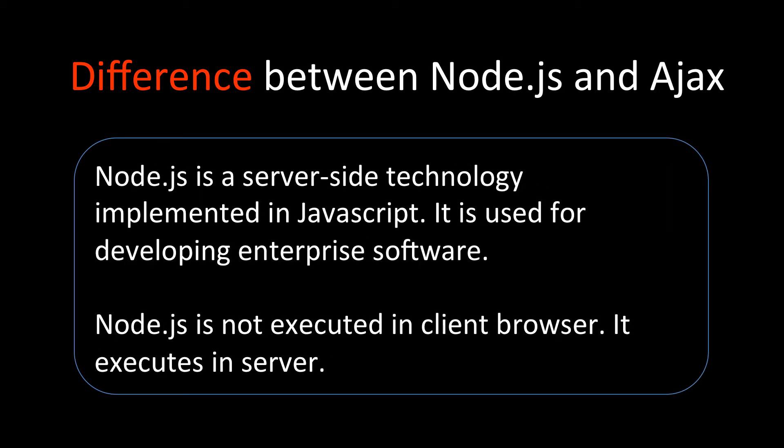Whereas Node.js is a server-side technology implemented in JavaScript. It is used for developing enterprise-level software — we can use Node.js to develop very large applications. Node.js is not executed in the client browser; it executes on the server, so it's server-side scripting. The main difference is: Ajax is on the client side and Node.js is on the server side.